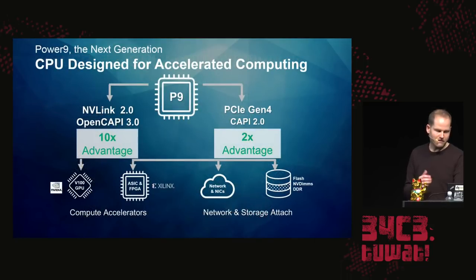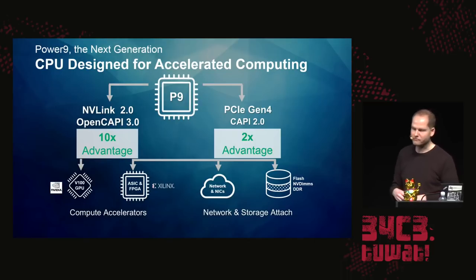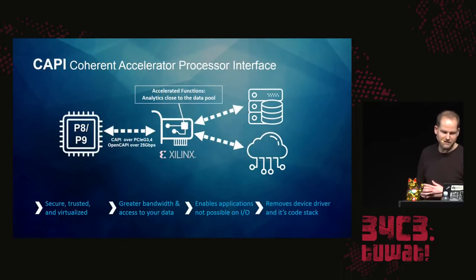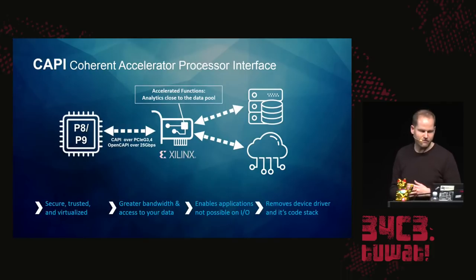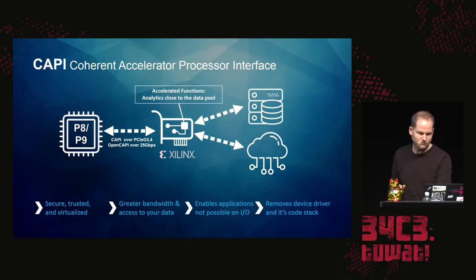You still have PCI generations available to get things faster, and with the CAPI extensions you have even more. You can also get Xilinx products attached with OpenCAPI, which is basically this new protocol and hardware built into the processor.